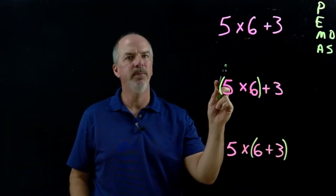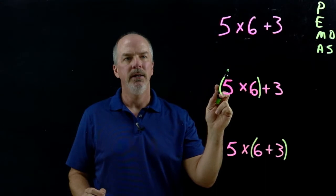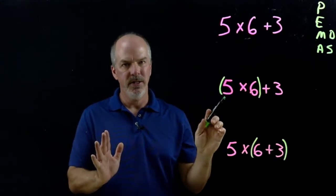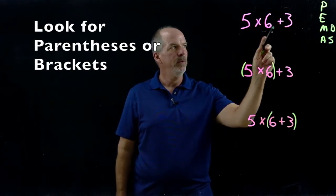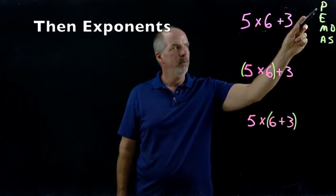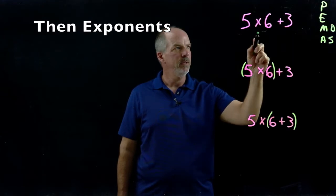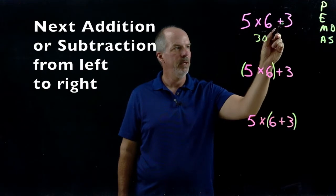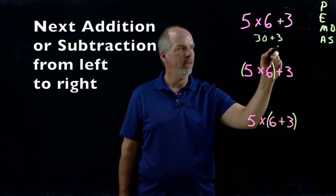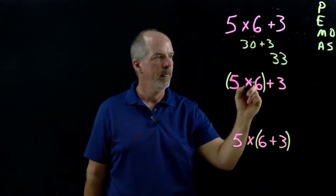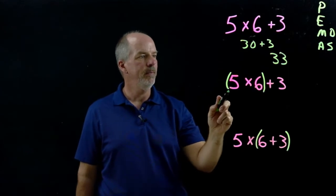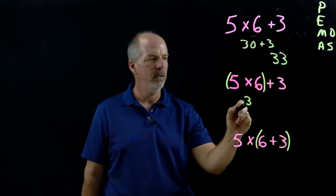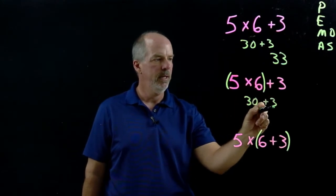Let's look at these three expressions which have the identical numbers and operations but the parentheses are different. In the first example, there's no parentheses, there's no exponents, but there is multiplication so we multiply first. We get 5 times 6 is 30, plus 3 and we'll get 33. In the second example, we have parentheses around the multiplication so there wouldn't be any change — we still get 30 plus 3 is 33.